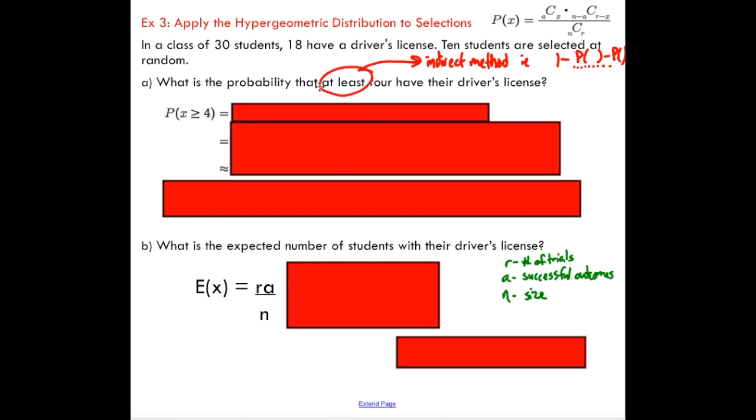This "at least" is a key indicator of a potential indirect method use. Remember, the indirect method is taking one minus the probability of not at least four. Reason being, at least four in this situation, we could start at four, go five, six, all the way up to 30. That's going to take us a long time. Some of you will do this on the test—you'll waste a lot of time.